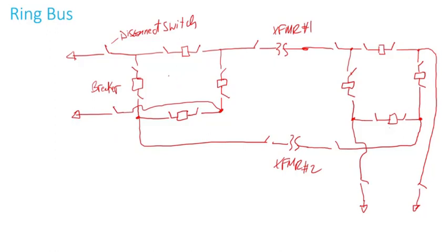This is a ring bus — it looks like a ring. You have four terminals: line one, line two, transformer one, and transformer two. Because you have four things connected, you need four breakers. Each breaker has one switch on its side for maintenance to isolate the breaker. In a separate video I talked about the trade-offs — straight bus versus ring bus versus breaker-and-a-half. Each one has trade-offs in terms of cost versus increased reliability.